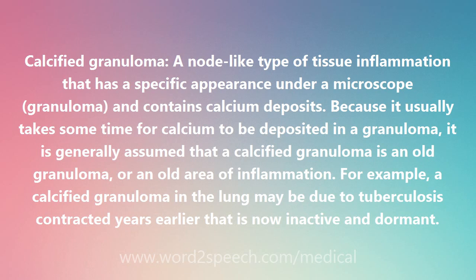Because it usually takes some time for calcium to be deposited in a granuloma, it is generally assumed that a calcified granuloma is an old granuloma, or an old area of inflammation. For example, a calcified granuloma in the lung may be due to tuberculosis contracted years earlier that is now inactive and dormant.